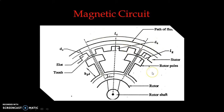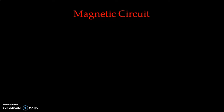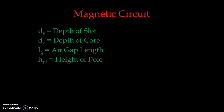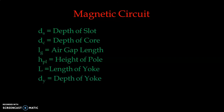The flux path can be seen based on this cross-section for a salient pole machine for a pair of poles. Key notations: ds is the depth of the slot, dc is the depth of the core, lg is the air gap length between stator and rotor, hpl is the overall height of the pole, l is the length of the yoke, and dy is the depth of the yoke. These notations are essential when calculating the MMF for each individual magnetic circuit.